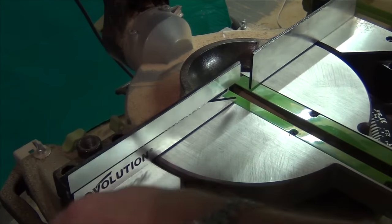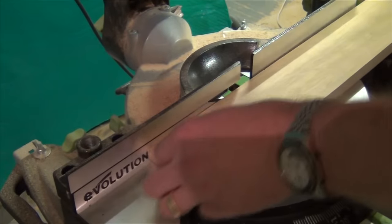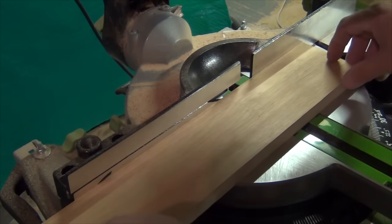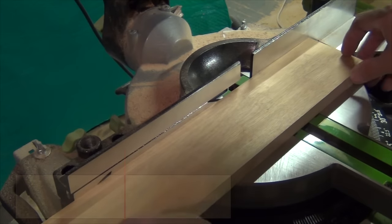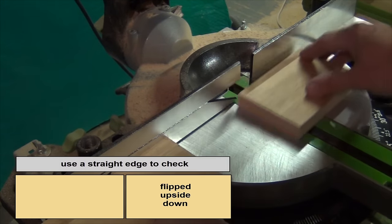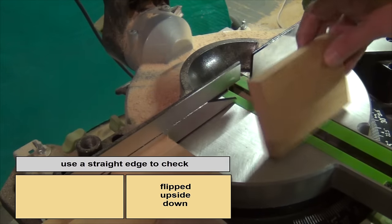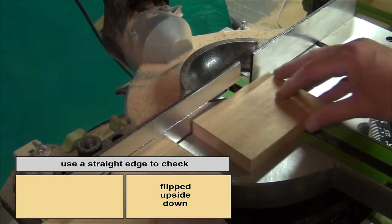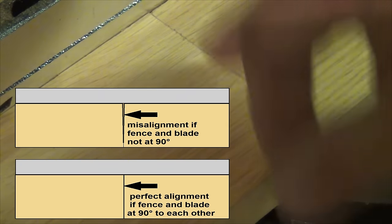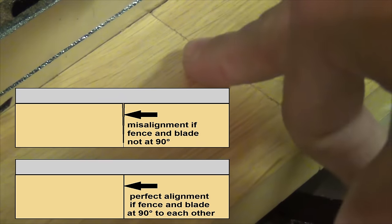The check that we do by cutting the board in half will double up the error, so that's why we do that one. Let's cut that section off, moving along the straight edge of the fence. Turn this over against the fence, move them together, and that's about as good as it gets. I'm very happy with that.